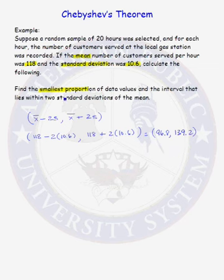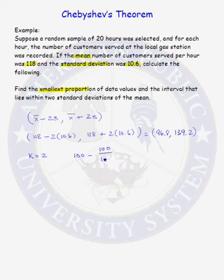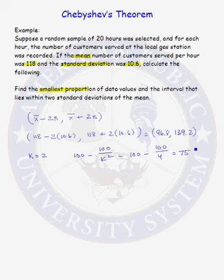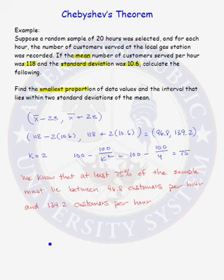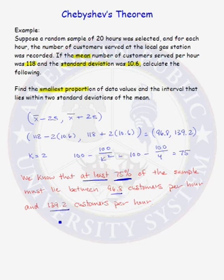Now we want to find the smallest proportion of data values that must lie within that interval. This is two standard deviations, so k equals 2. We know that at least 100 minus 100 over k squared, or 100 minus 100 over 4, equals 75. So at least 75% of the sample must lie between 96.8 customers per hour and 139.2 customers per hour.